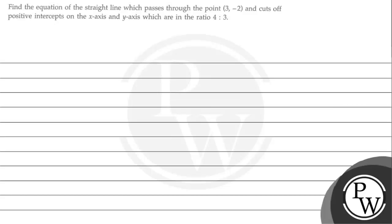Hello, budjo. Let's read the equation. The equation says: find the equation of straight line which passes through point (3, -2) and cuts off positive intercepts on x-axis and y-axis which are in ratio 4:3. So, find the equation of straight line.